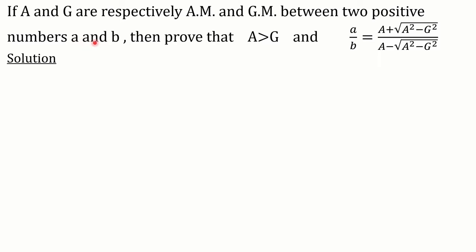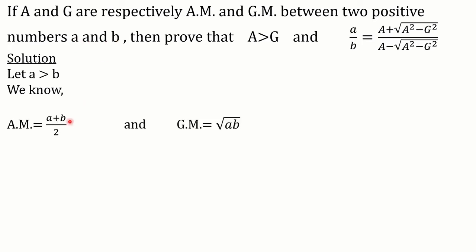We are given two positive numbers. Let's say a is greater than b. We know the arithmetic mean between a and b is given by (a + b) / 2, and the geometric mean between a and b is given by √(ab).